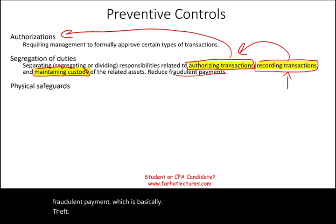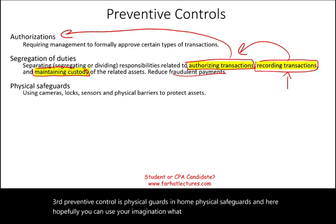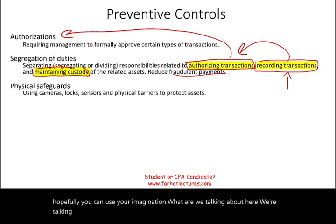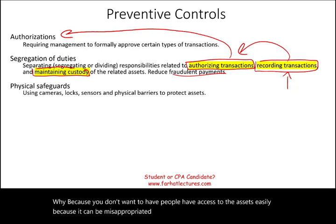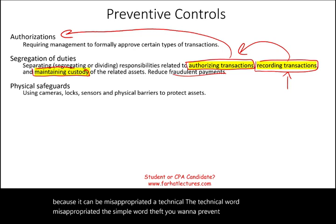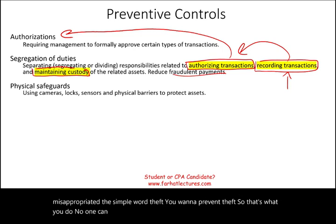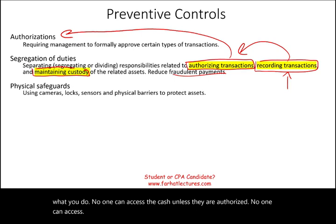A third preventive control is physical safeguards. We're talking about fences, cameras, locks, sensors, and physical barriers to protect the asset. You don't want people to have easy access to assets because they can be misappropriated — the simple word is theft. No one can access the cash or inventory unless they are authorized.